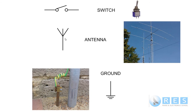You must know antenna and ground — these are the two compulsory symbols you need to know for your assessment. But if I were you, I would know all of them. There are only a couple more to go.